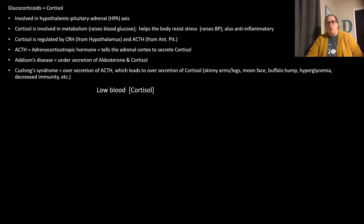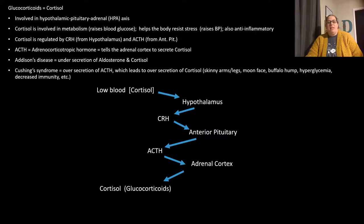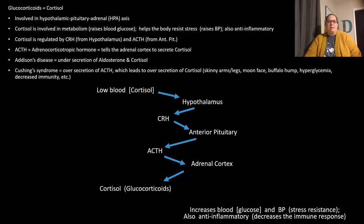The cortisol flow chart: low blood cortisol is detected by the hypothalamus, which releases CRH. CRH signals the anterior pituitary to release ACTH. ACTH tells the adrenal cortex to release cortisol (glucocorticoids). Cortisol increases blood glucose, raises blood pressure to resist stress, and is an anti-inflammatory by decreasing the immune response. This is why people who are chronically stressed tend to get sick more often — cortisol suppresses the immune system.